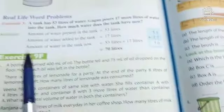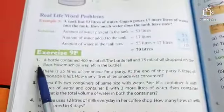Now note down question number 1 from your book. Firstly I am explaining you this question. A bottle contained 400 ml of oil. The bottle fell and 75 ml of oil dropped on the floor. Now the question is how much oil was left in the bottle?